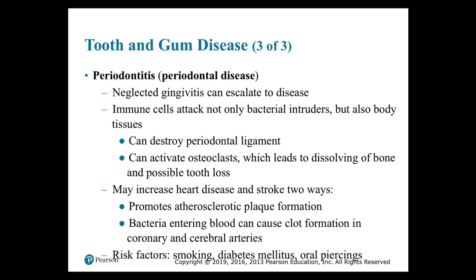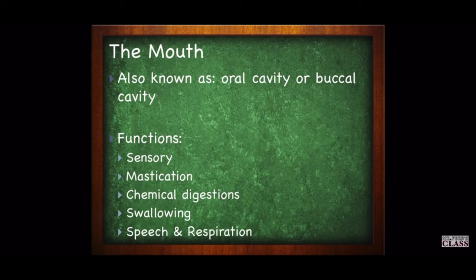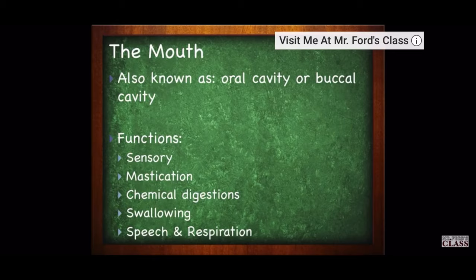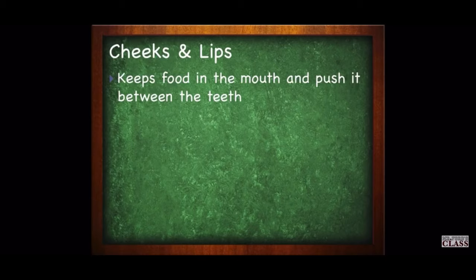The first place along the entire digestive tract is the mouth, also known as the oral cavity or buccal cavity. The functions of the mouth include sensation, mastication or chewing, chemical digestion, swallowing, speech, and respiration. Structures include the cheeks and lips, tongue, and teeth. The cheeks and lips keep food inside the mouth and push it back between the teeth during chewing — they are also important for speech as well as blowing and sucking.